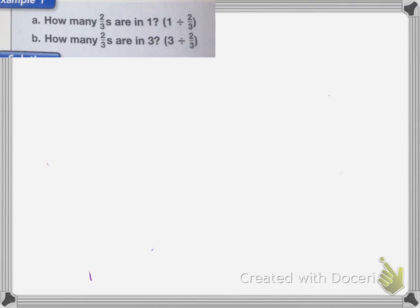So my first question says, how many two-thirds are there in 1? Now we learned in a previous lesson that when it asks how many two-thirds are in 1, it's asking for the reciprocal of two-thirds. So the reciprocal of two-thirds, remember, we switch the numerator and the denominator, so the answer is three-halves.